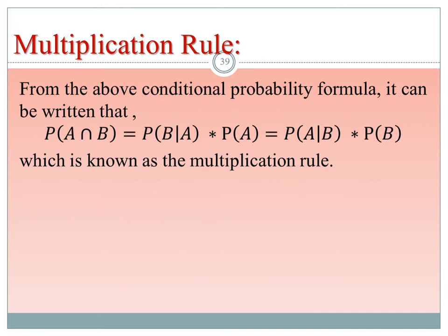The multiplication rule is derived from the conditional probability formula. Since P(B|A) = P(A ∩ B) / P(A), we can rearrange to get: P(A ∩ B) = P(B|A) × P(A). Similarly, P(A ∩ B) = P(A|B) × P(B). This multiplication rule is useful in various probability applications.